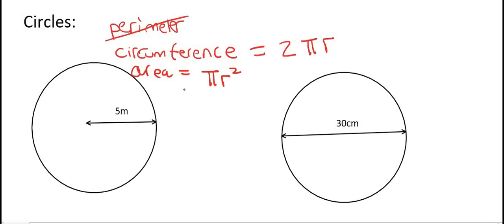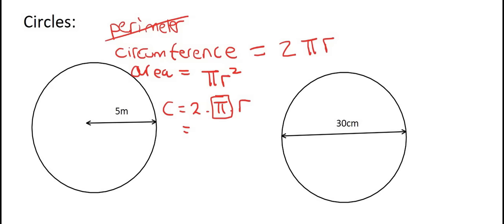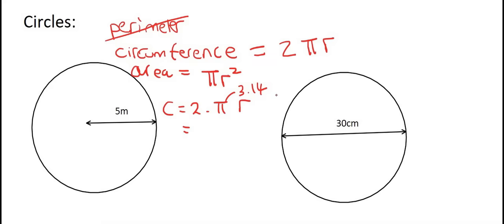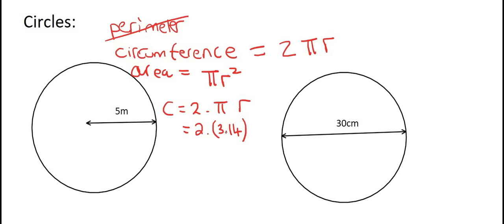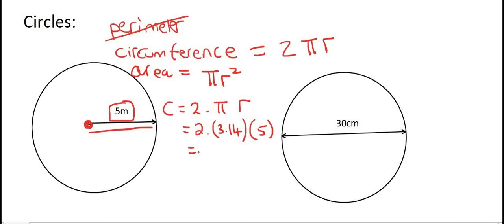For the first circle on the left, to work out the circumference we're going to say 2 times pi times radius. Your teacher might tell you to use pi on your calculator, or they might tell you to use 3.14 — just do whatever your teacher says. Pi is 3.14, though it's actually a number that never stops. The radius of the first circle from the middle to the edge is 5. If we type this on the calculator, you're going to get 31.4 meters.